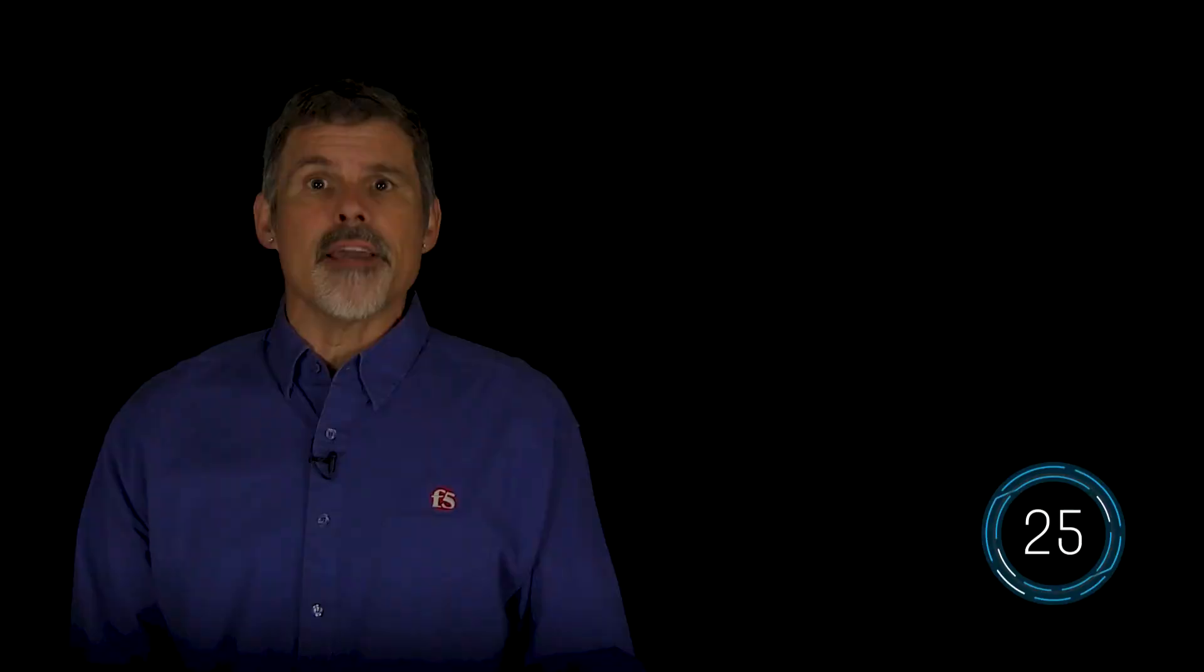That description includes the attack type using the vulnerability, its impact, the software components that are affected by it, and any attack vectors that can make use of the vulnerability. Typically, this looks like problem type in product version causes impact when attacked.